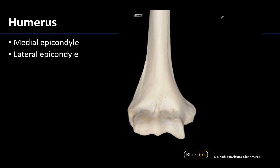Hopefully we are becoming quite familiar with this image of the distal humerus — the anterior distal humerus — as we keep bringing it up and adding structures as we go through these sessions. Today I want to focus on the epicondyles, which are both located just superior or proximal to the articular region with the capitulum and the trochlea, which we've identified before.